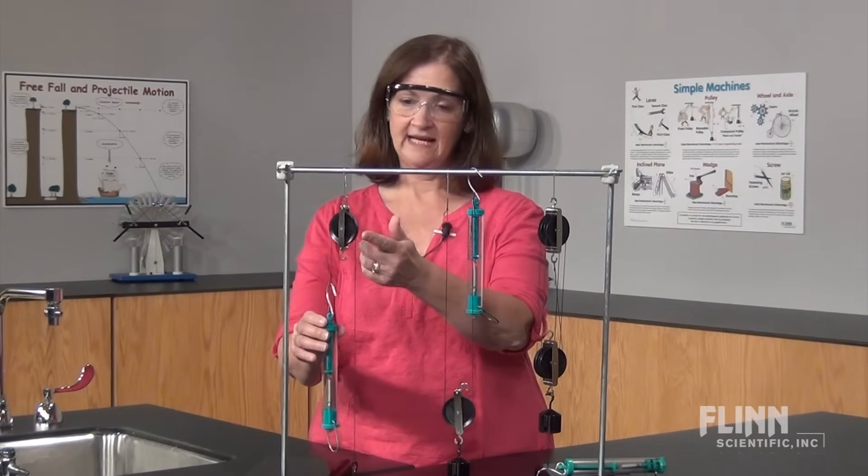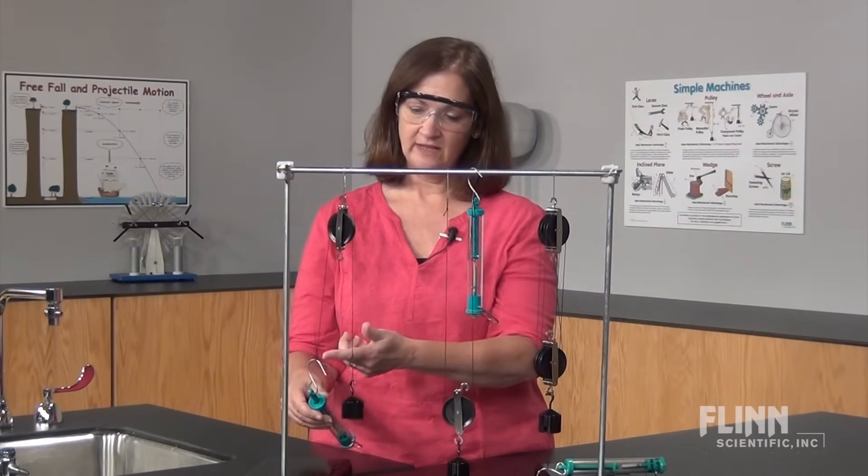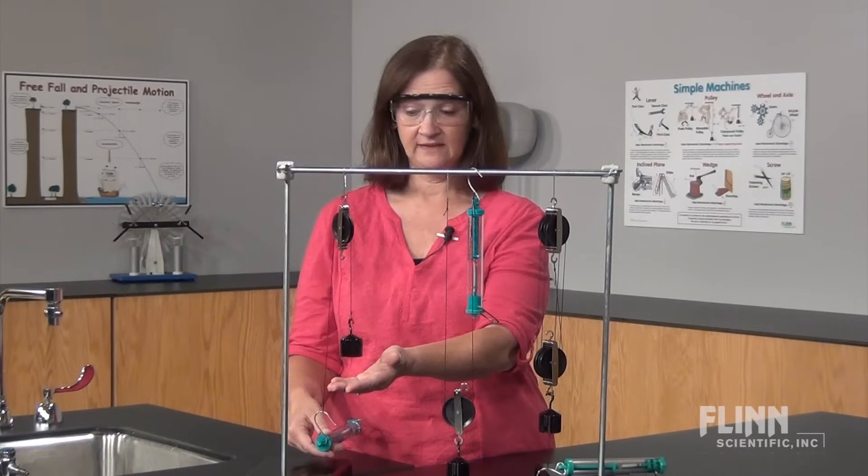A single fixed pulley has just one supporting rope since the side of the rope that you're pulling on doesn't directly support the load that's being lifted.